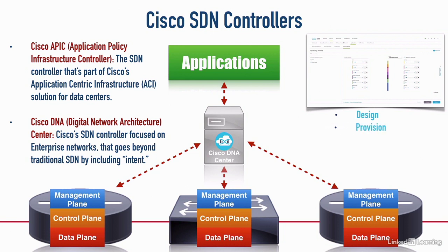We can also do provisioning. For example, if we're buying new equipment, we can have the configuration of that new equipment already configured within DNA Center, and we can have the equipment sent to the destination office where it's going to be installed. Somebody at that office simply plugs it in, it goes out to a DNS server, downloads the IP address of a TFTP server, and pulls down its configuration. We can also use the DNA Center interface to do configuration.